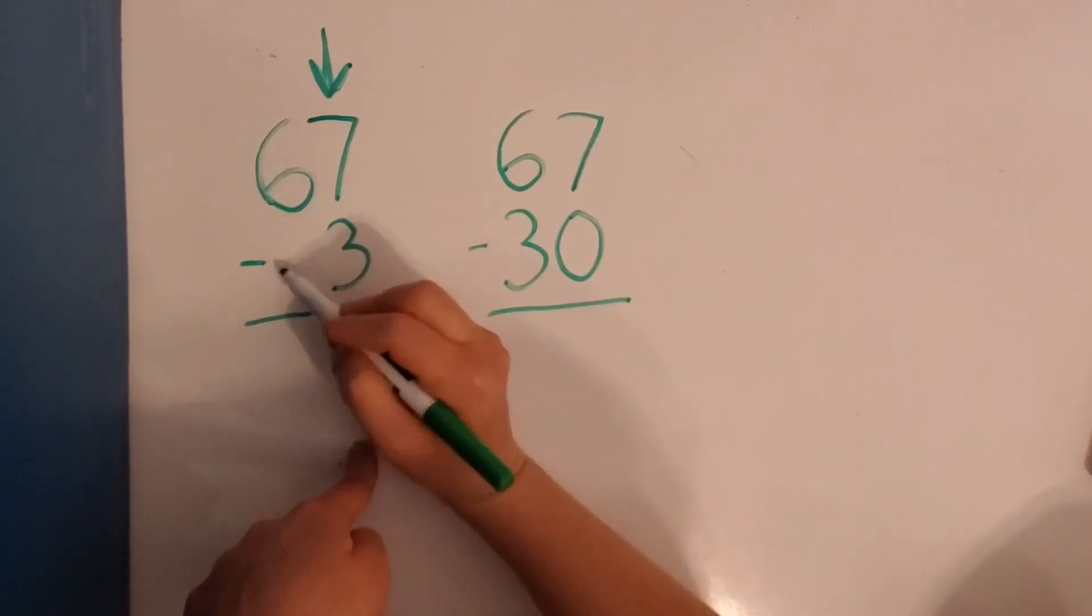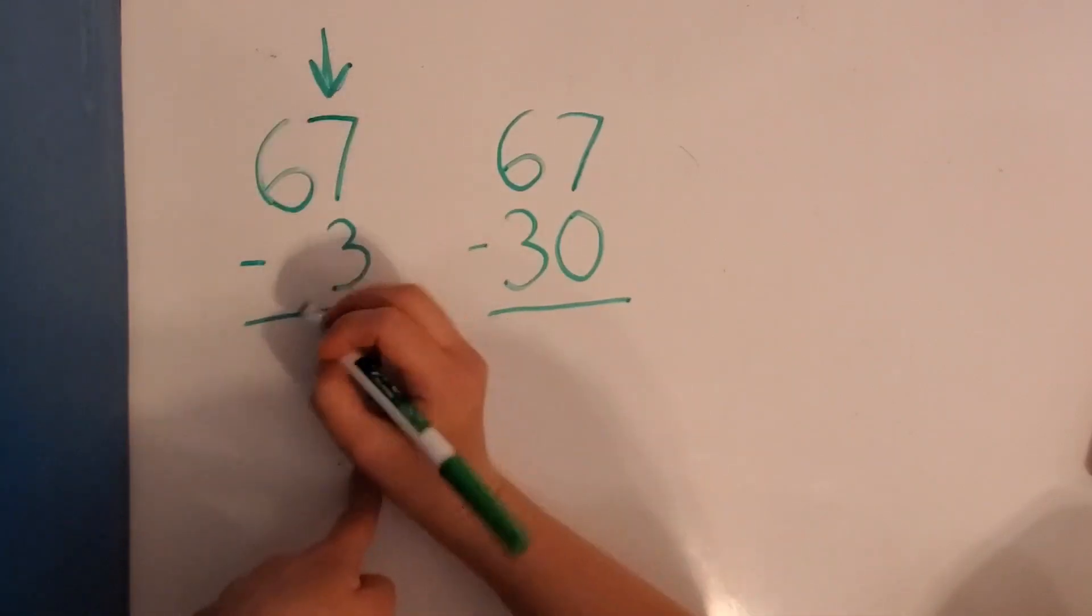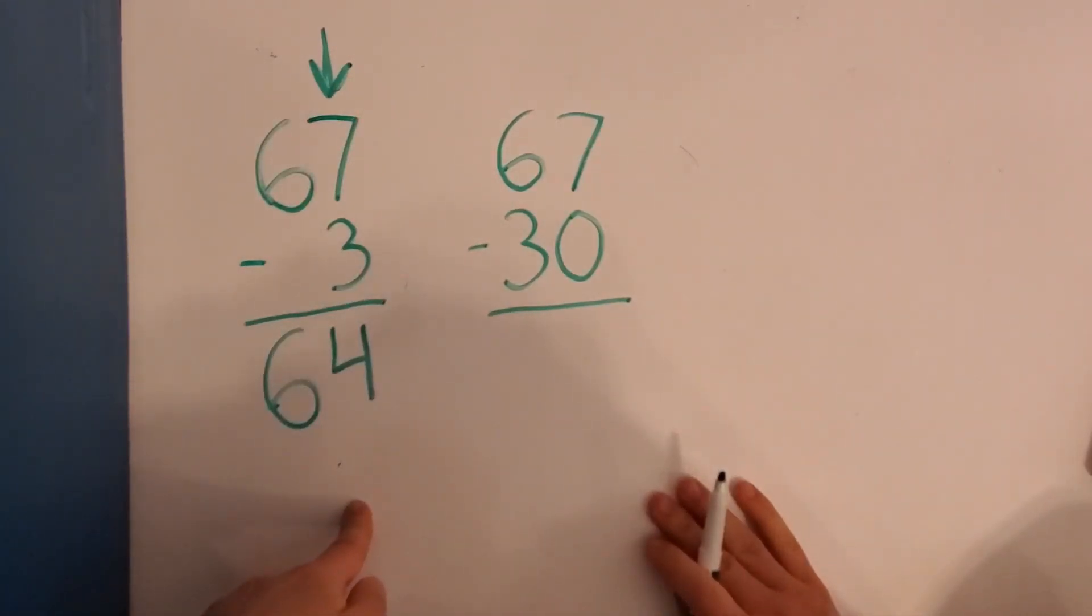Then 6. Oh! There's nothing here, right? So 6 is just going to come straight down here. So 67 minus 3 equals 64. This is another way to do it.